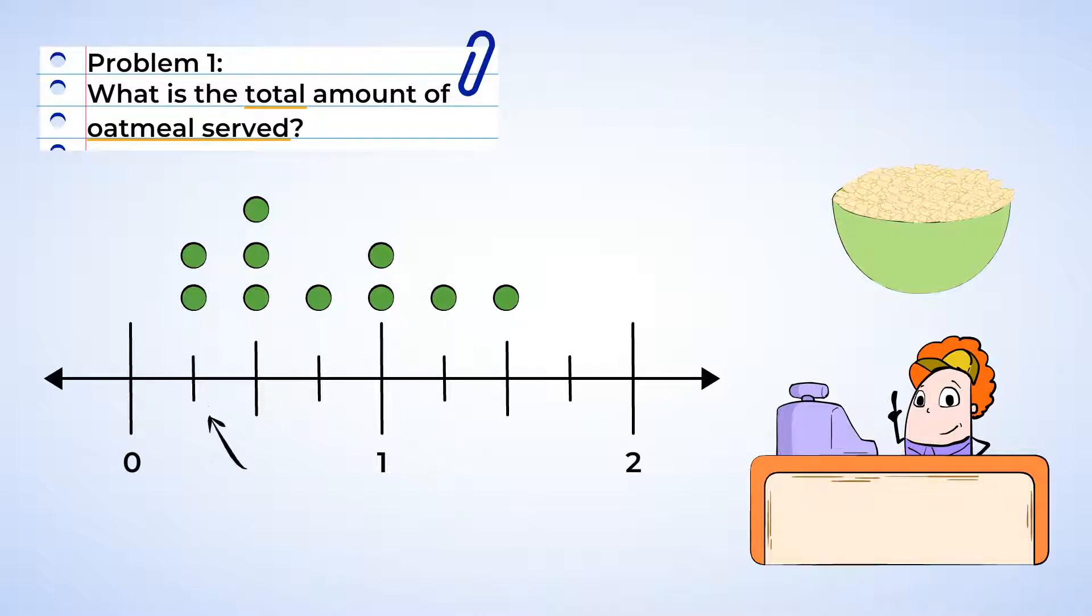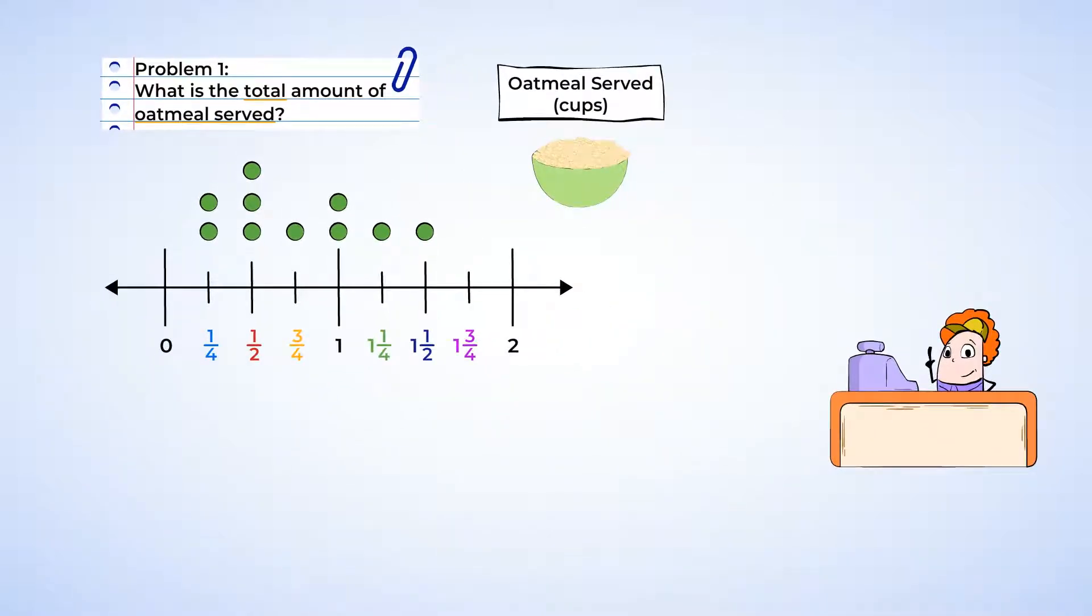But each serving was a different amount. The number line represents the number of cups of oatmeal, and each section is divided into four parts. This means we are dealing with fourths. Let's look at each fraction and find those totals before adding them all up.